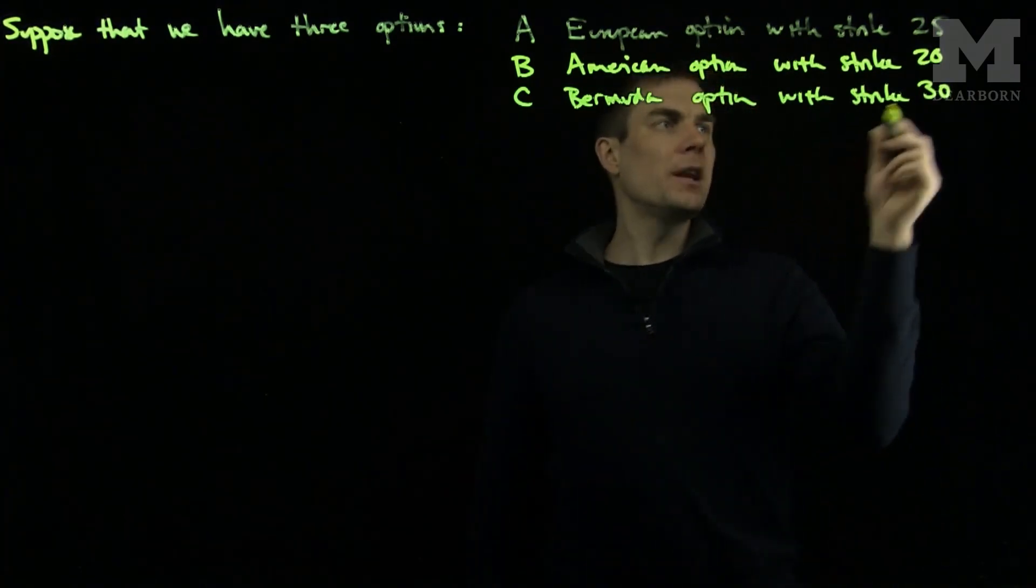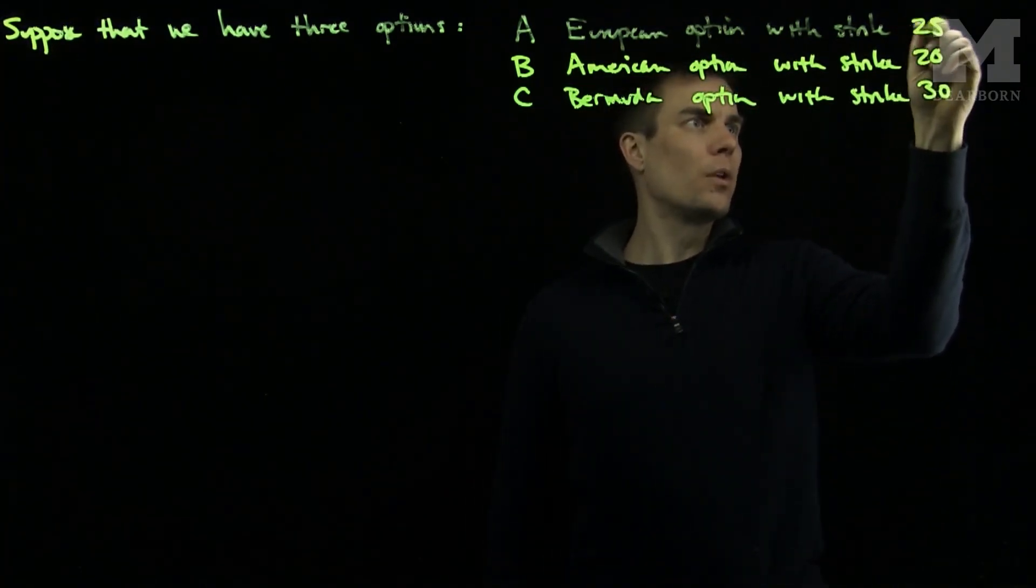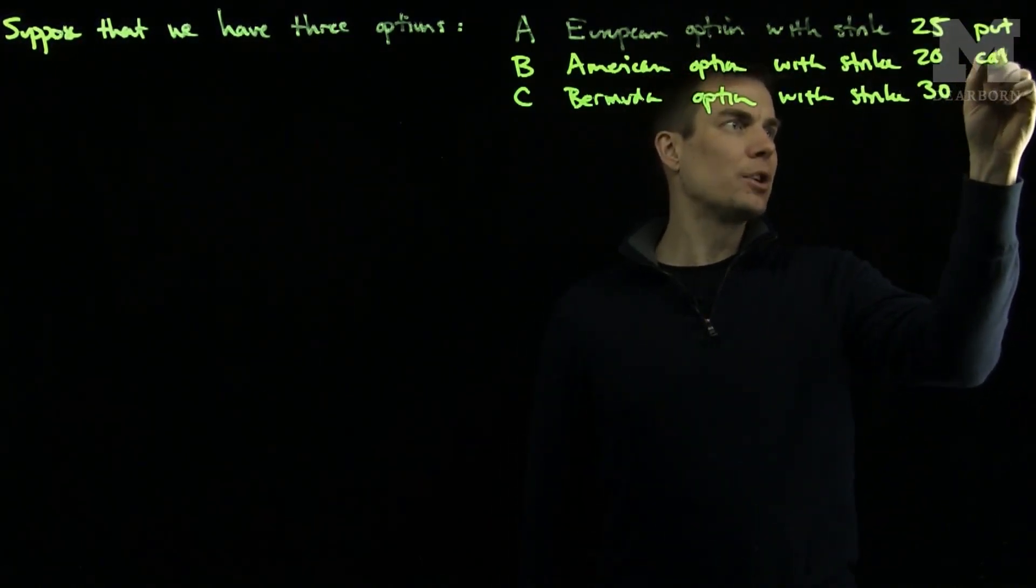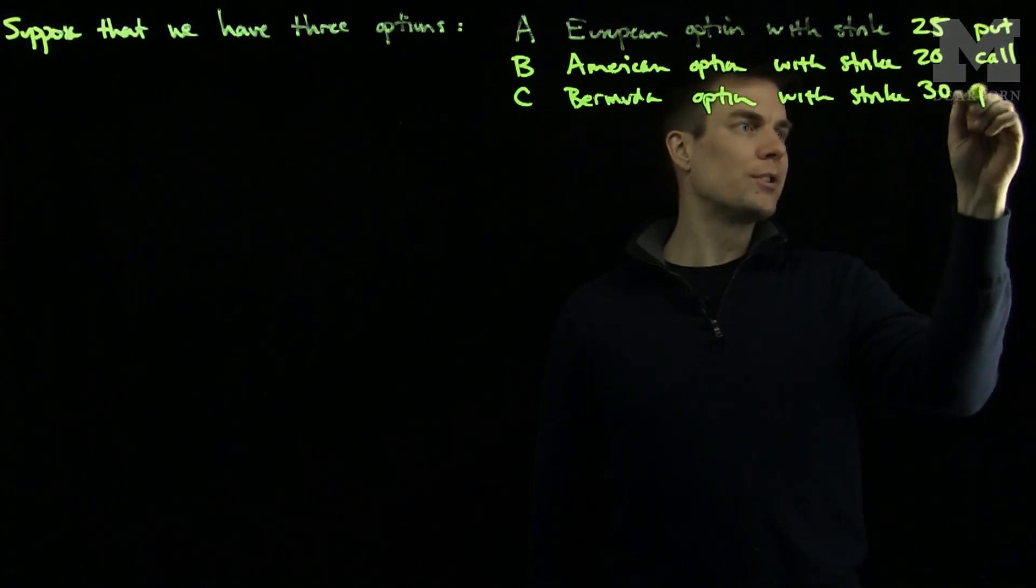We'll assume that the European option with strike 25 is a put option, the American option is a call option, and the Bermuda option is a put option.